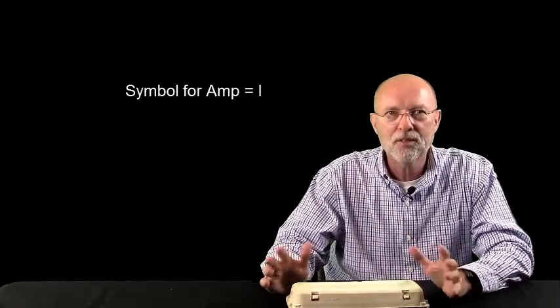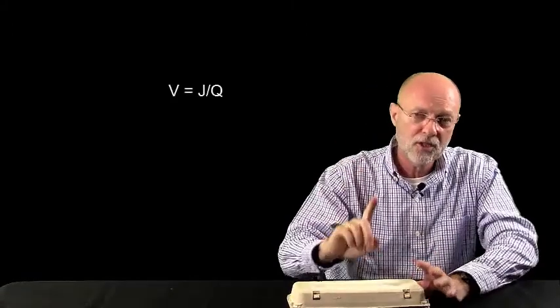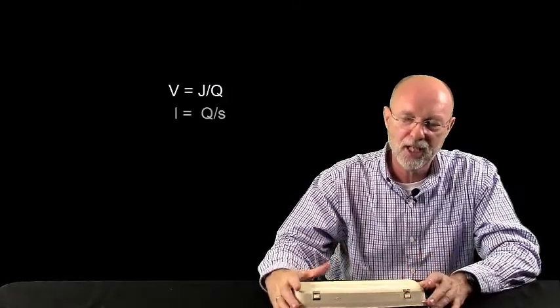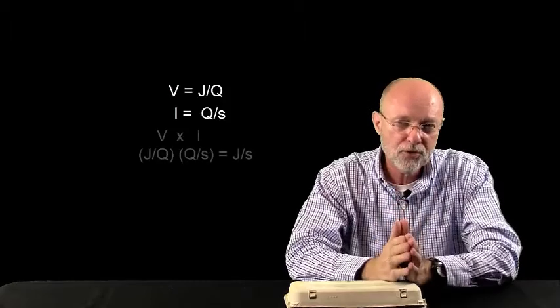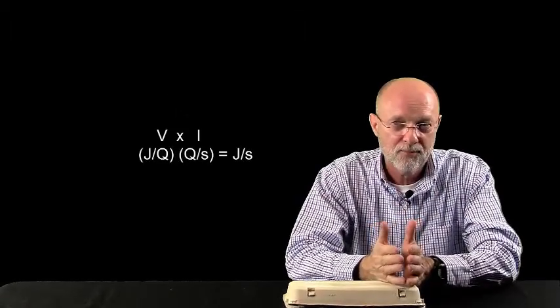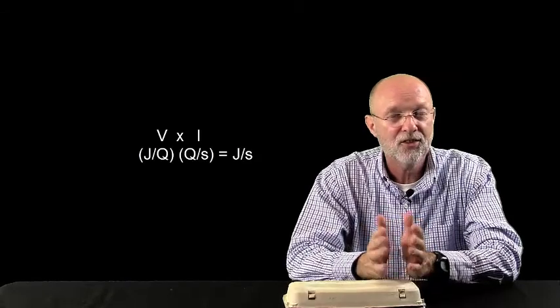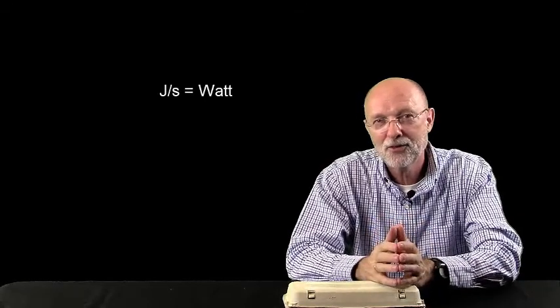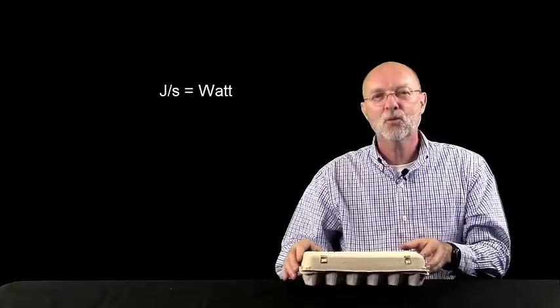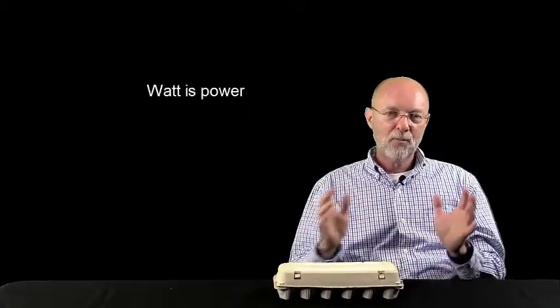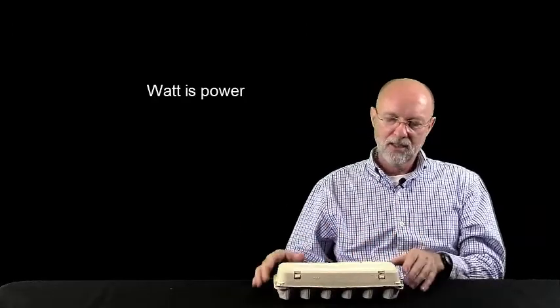Now, let's take a look at the last one, the watt. If we look at the definition of the volt, it was one joule per Coulomb. Definition of the amp, one Coulomb per second. Let's put those two units together, and what do we get? Joules per second. Does that remind you of any unit we've talked about before? Hopefully, that reminds you of the watt. So, the watt is the basic unit of power. Power means how much work can we do per second.